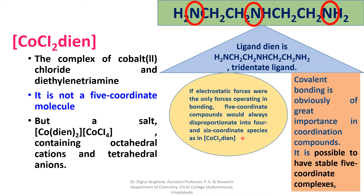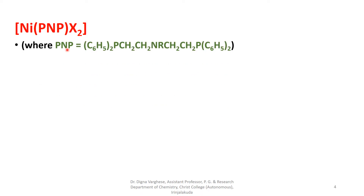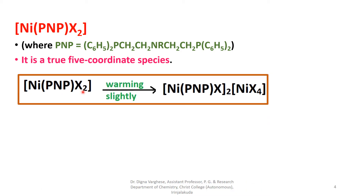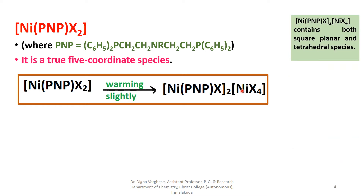Covalent bonding is obviously of great importance in coordination compounds, and it is possible to have stable five-coordinate complexes. For example, NiPnPX2, where PnP is C6H5-twice-P-CH2CH2NR-CH2, is a phosphine-type ligand and a true five-coordinate species. However, on warming slightly, this compound splits into both square planar and tetrahedral species.